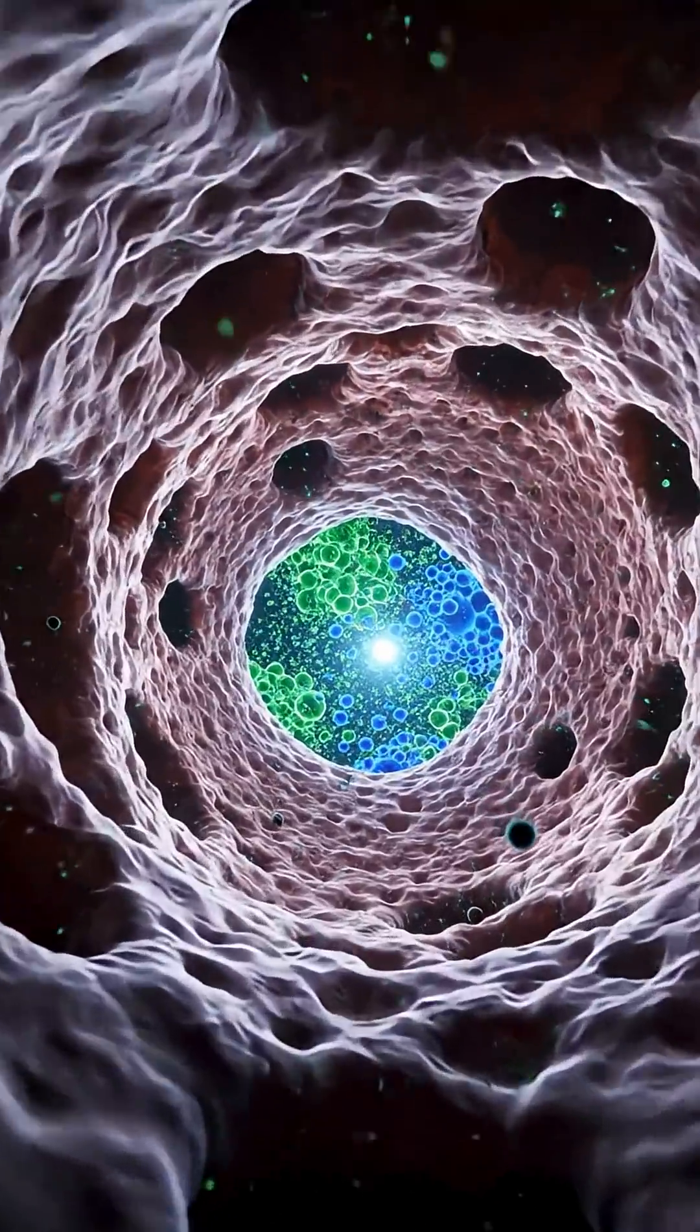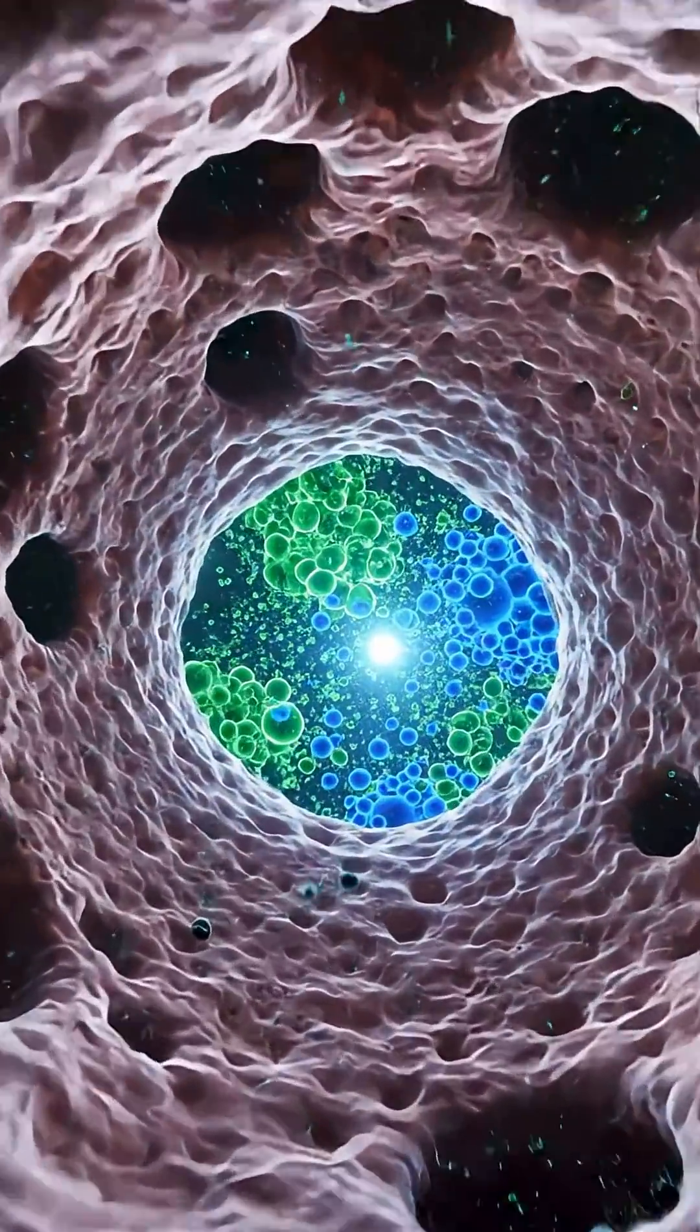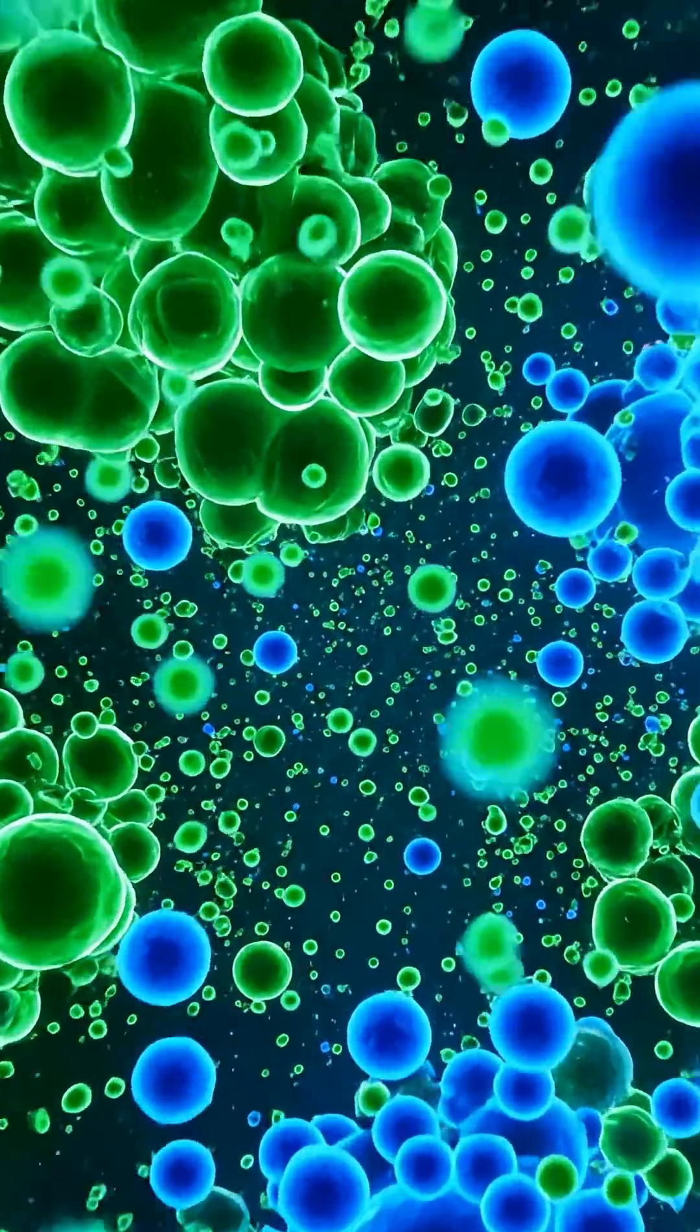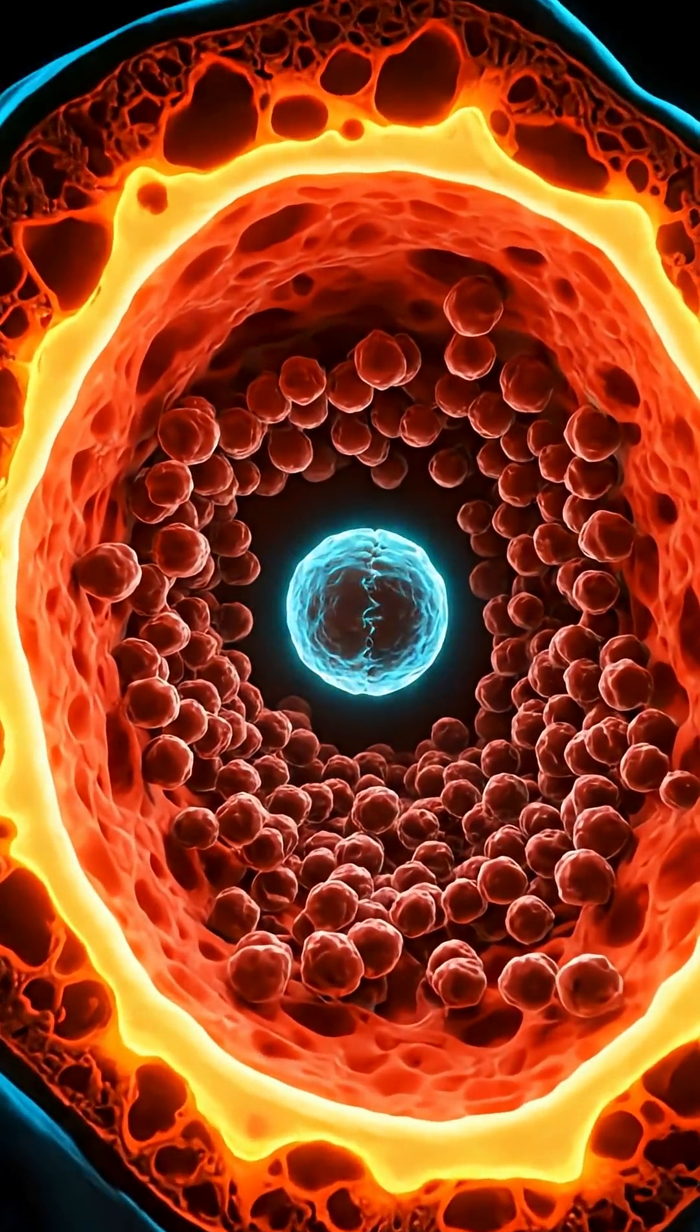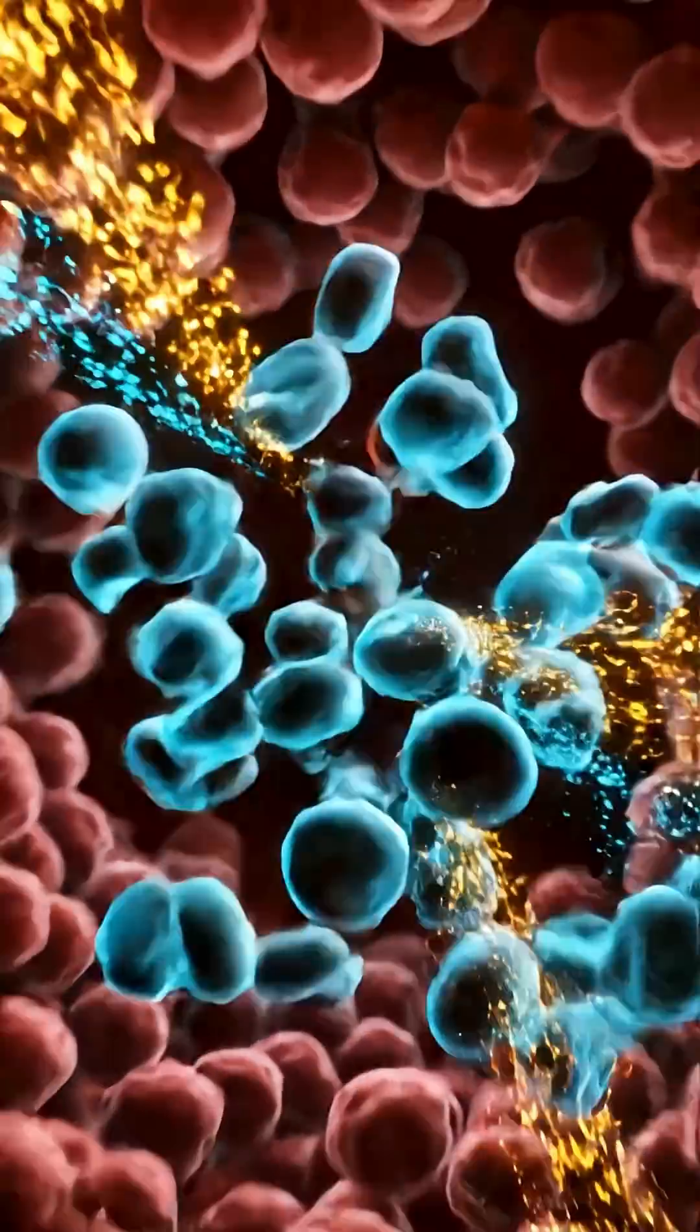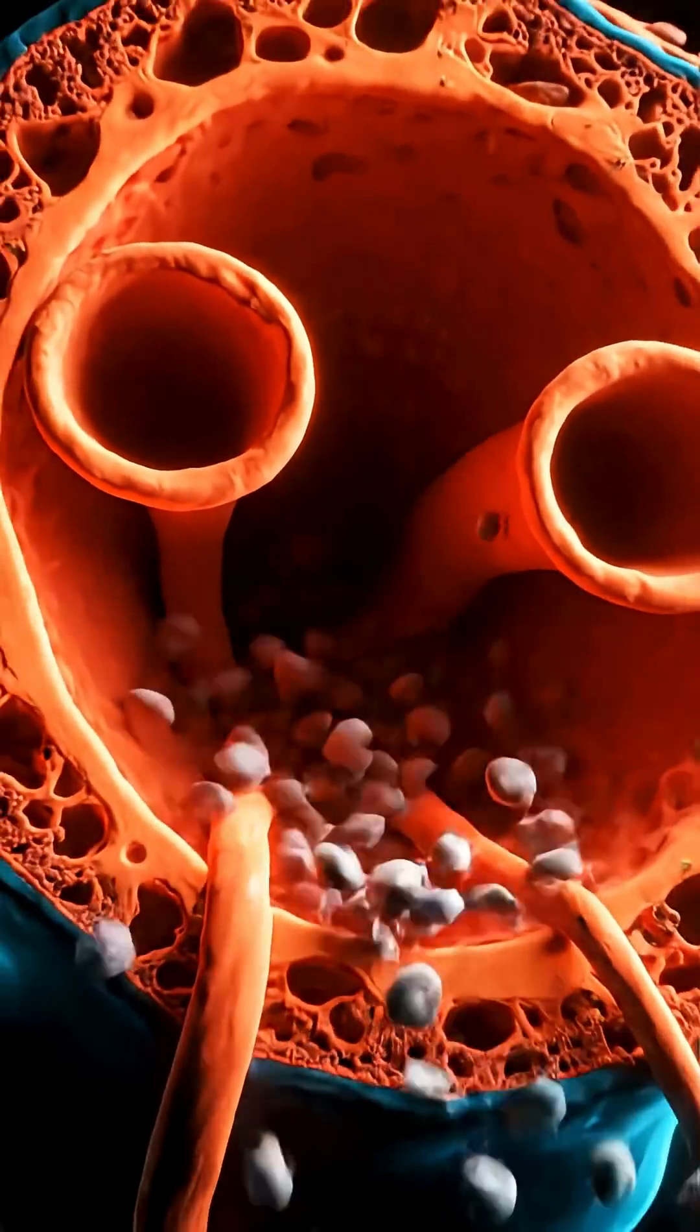Lymph nodes act as command centers where decisions are made and immune memory begins. Deep in the marrow, new defenders are born, crafted and trained to fight specific threats.